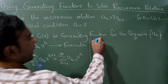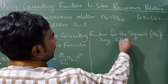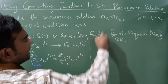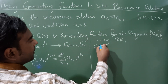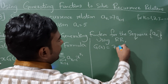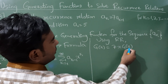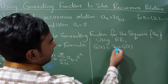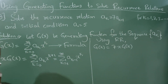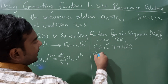Using the recurrence relation, I can write g(x) on the left side and 7·x·g(x) on the right side, because of degree 1. Bringing this to the left hand side gives g(x) minus 7·x·g(x).